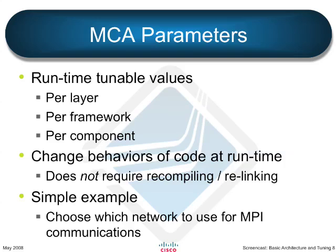We classify MCA parameters by three areas. There are runtime tunable values per layer — for example, the entire MPI layer or the entire ORTE layer. There are runtime tunable values for the entire framework — for example, governing all the collective algorithms used in the MPI layer. And then there are also some per component — for example, if I want to tune the behavior of a particular open fabrics component on a point-to-point network, I can do that.